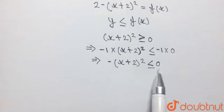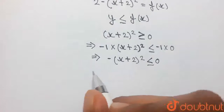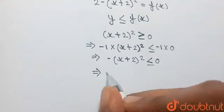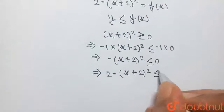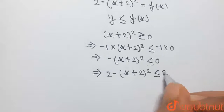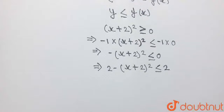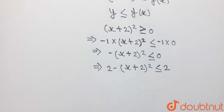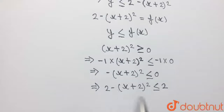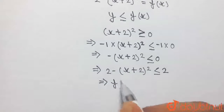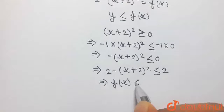Now, adding 2 to both sides of this inequation, on the left-hand side we get 2 − (x + 2)², which is less than or equal to 0 + 2, which is simply 2. Since the left-hand side is f(x), we can write f(x) ≤ 2.